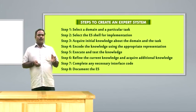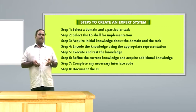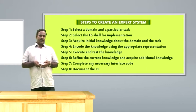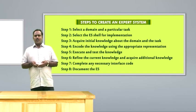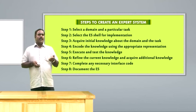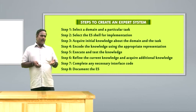What are the steps to create an expert system? Step one: select a domain and a particular task. Step two: select an expert system shell based on the topic and collect content, simultaneously developing the expert system shell with the help of the knowledge engineer and domain expert. Step three: acquire initial knowledge about the domain and the task. Step four: encode the knowledge using appropriate representation — that is the mapping stage. Then execute and test the knowledge, and refine based on testing, acquiring additional knowledge as needed. Finally, complete all necessary interface code and document the expert system in online as well as offline form.